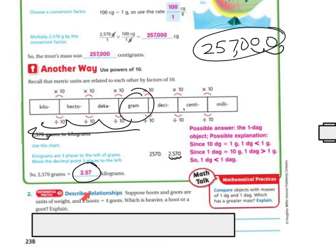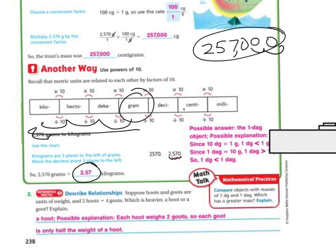Explain: it says describe the relationship. Suppose hoots and goots are units of weights. Two hoots equals four goots. Which is heavier, a hoot or a goot? Explain. If that's the case, each hoot would weigh 2 goots, so the goot is only half the weight of the hoot. These are not real weights, but you kind of get the idea when you're comparing. You've got to think about that - which one weighs more.